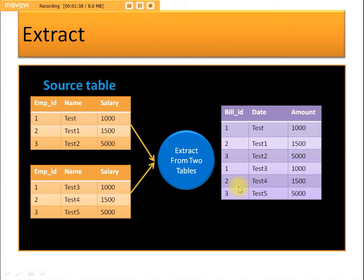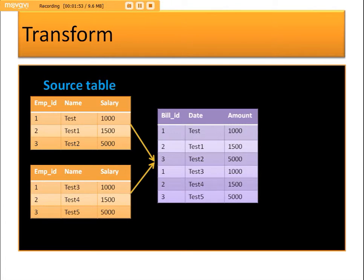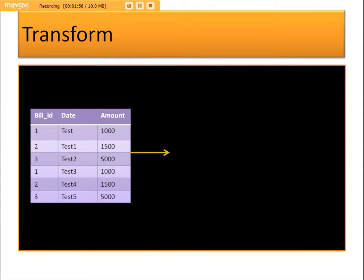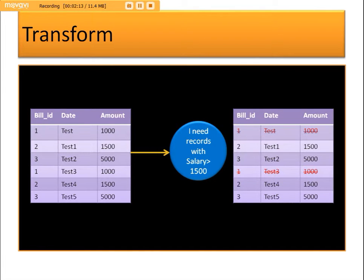So we have six records extracted. The next step is transforming. The transformation rule is defined by the business team based on end user requirements. For example, in our case the business rule is: we need records with salary greater than 1500; we don't want records which are less than 1500.